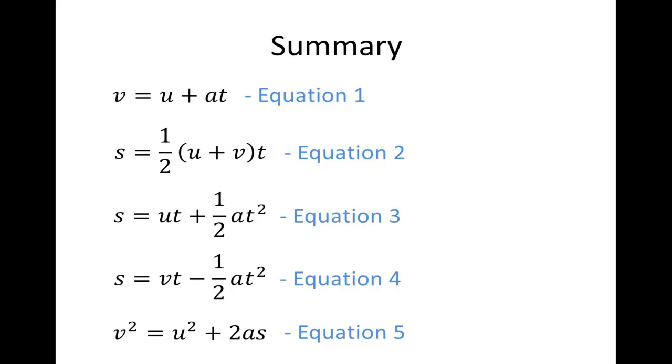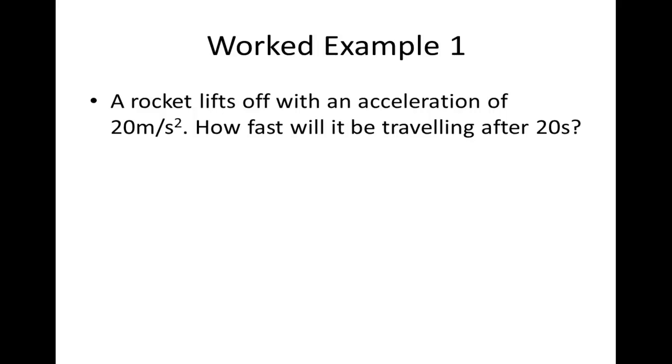It's probably better looking at an example. Let's say a rocket lifts off with an acceleration of 20 meters per second squared. How fast will it be traveling after 20 seconds? It's always best to approach this by listing the SUVAT variables and using the question to fill in the values. So we don't know what the displacement is. The rocket lifts off with zero initial velocity. We want to find out what its speed is after 20 seconds. Its acceleration is 20 meters per second squared. And we are measuring what the speed is after 20 seconds.